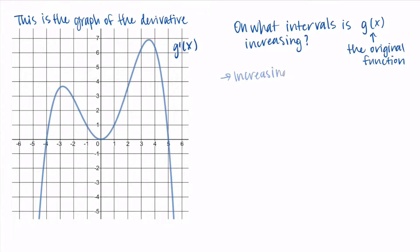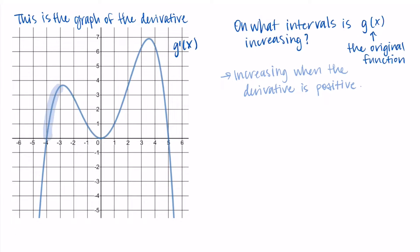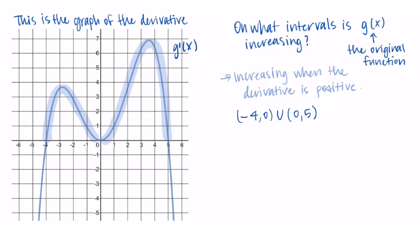The function g, the original function, is increasing when the derivative g prime is positive — specifically when the derivative has positive outputs. So we want to look at where the graph of the derivative is above the x-axis. I'm seeing that between negative 4 and 0 on the x-axis we have positive outputs, and then again from 0 to 5 we have positive outputs. So g is increasing on the interval negative 4 to 0, unioned with the interval from 0 to 5.